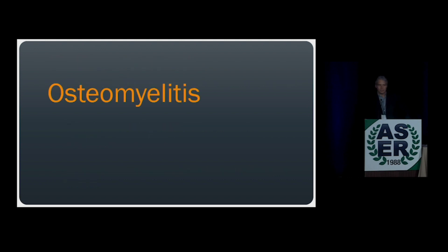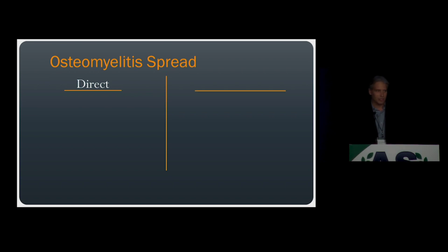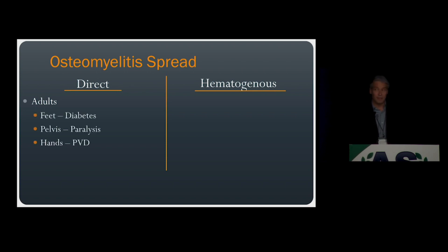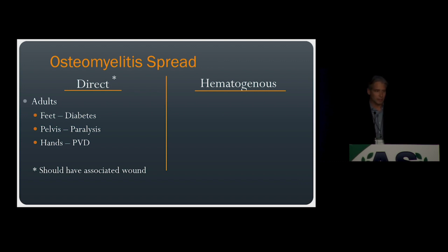We'll start by talking about osteomyelitis. When thinking about osteomyelitis, it helps to think about it in terms of how it spreads. You can have direct spread from a source, or you can have hematogenous spread in the blood. Direct spread is most commonly seen in adults — typically in the feet of diabetics, in the pelvis of bed-bound patients such as paraplegics, or in the hands of people with peripheral vascular disease. Direct spread usually results from an associated adjacent skin ulcer.